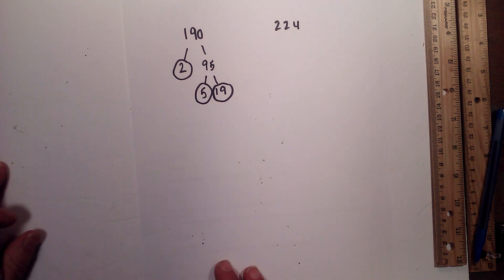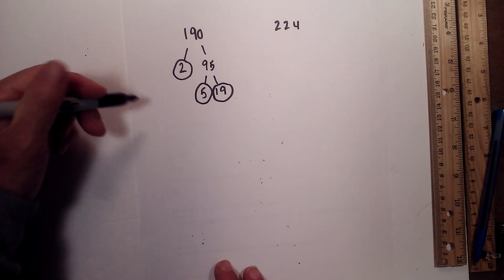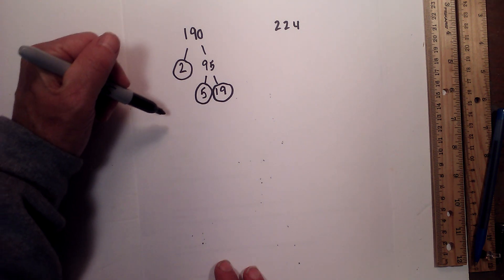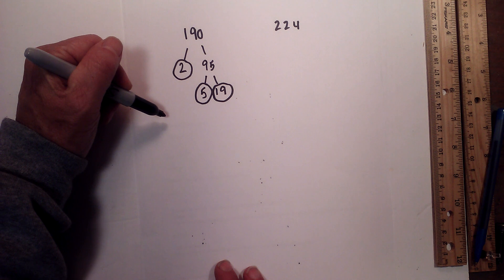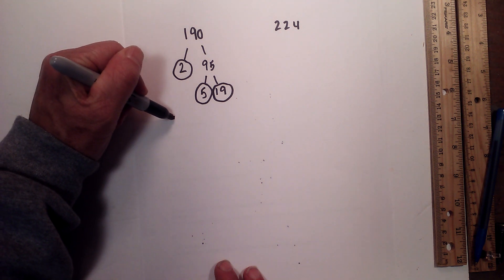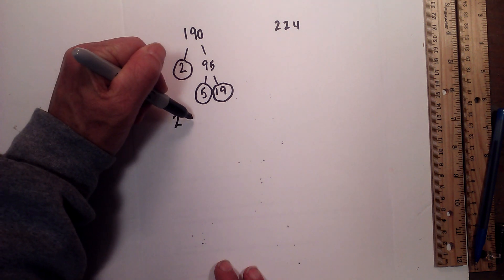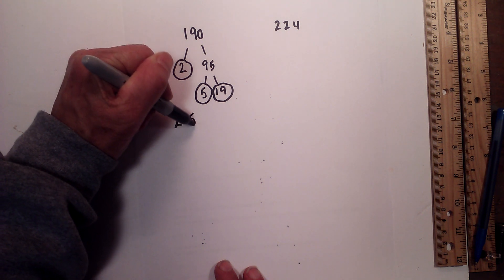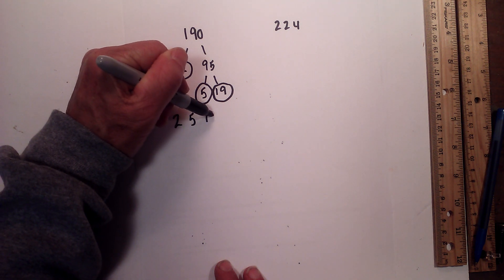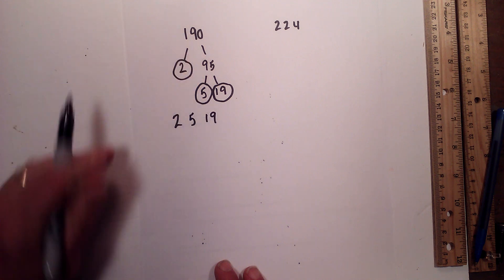I am now down to prime numbers, so I am finished. The prime factorization of 190 is 2 times 5 times 19.